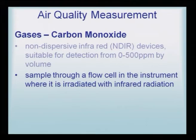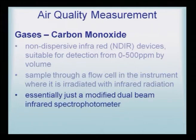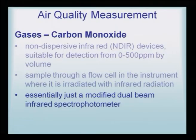Carbon monoxide gas is particularly infrared light sensitive, whereas SOx and NOx were UV sensitive. Essentially, a modified dual beam infrared spectrophotometer can do the needful. So if we have a carbon monoxide sample, we can analyze it on a double beam infrared spectrophotometer.